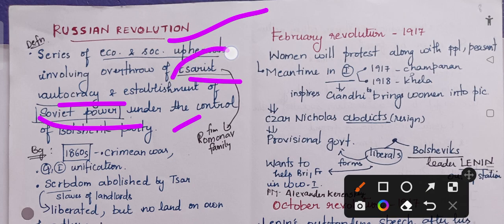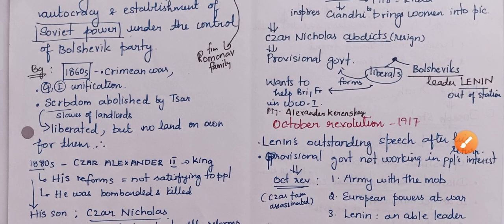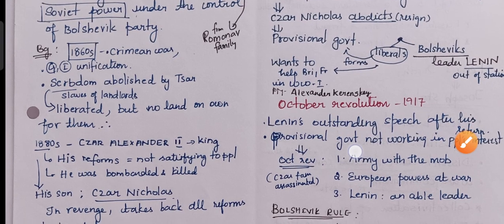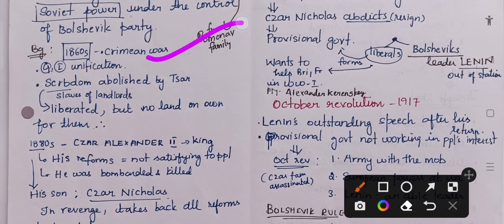This Tsarist party is from the Romanov family. Now we will look at the background. In the 1860s, the Crimean War was taking place, and we also saw the Germany and Italy unification. Then serfdom, that is the system of land slaves, was abolished by the Tsar. Serfdom was liberated, but no land was given to the people on their own.